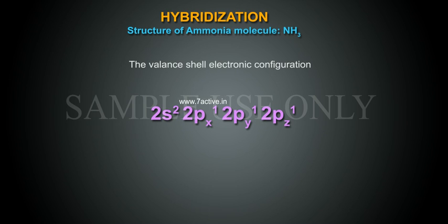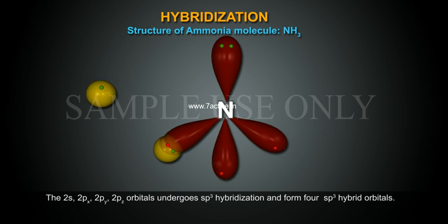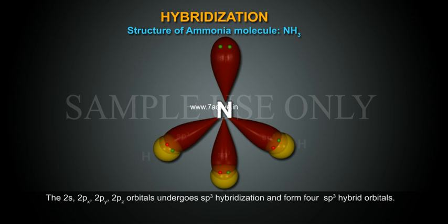The valence shell electronic configuration 2s2, 2px1, 2py1, 2pz1. The 2s and 2p orbitals undergo sp3 hybridization and form four sp3 hybrid orbitals.